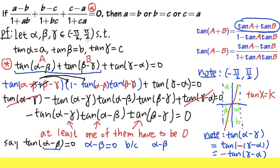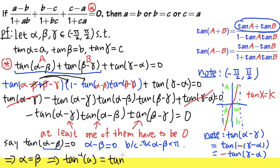The reason is that alpha and beta are both on the interval from negative pi over 2 to positive pi over 2, so alpha minus beta ranges from negative pi to positive pi. On that interval, tangent equals zero only when the input is zero. So alpha equals beta, and since alpha equals arctan(a) and beta equals arctan(b), and arctan is one-to-one and onto, we conclude a equals b. We've shown that one of the equalities holds, so the proof is complete.